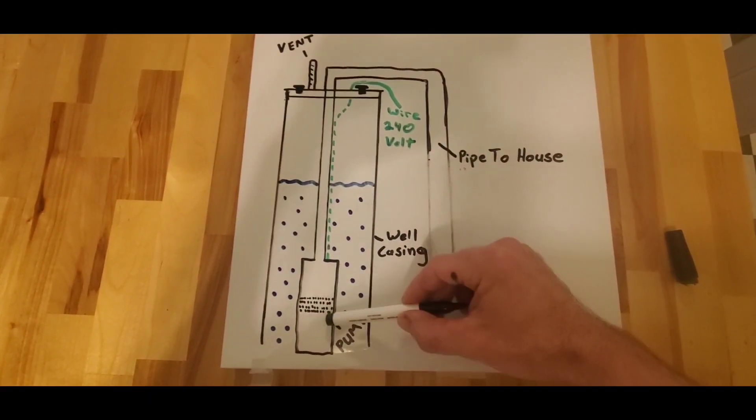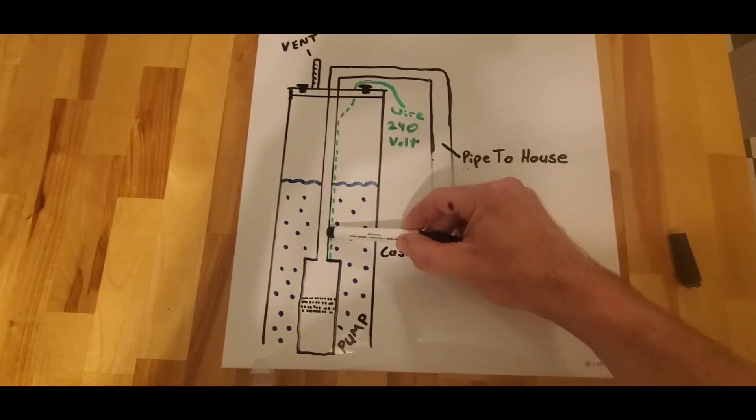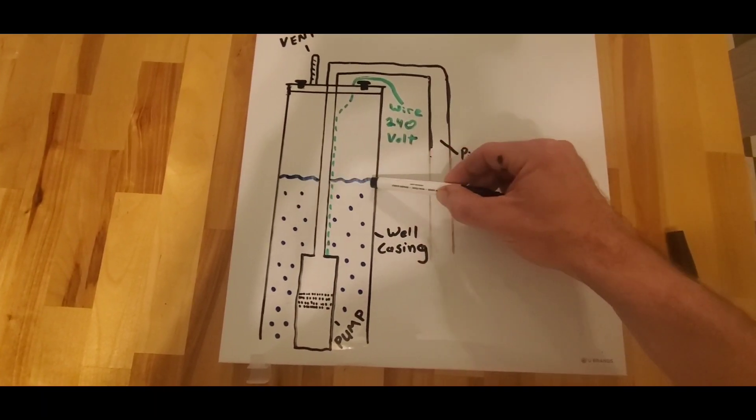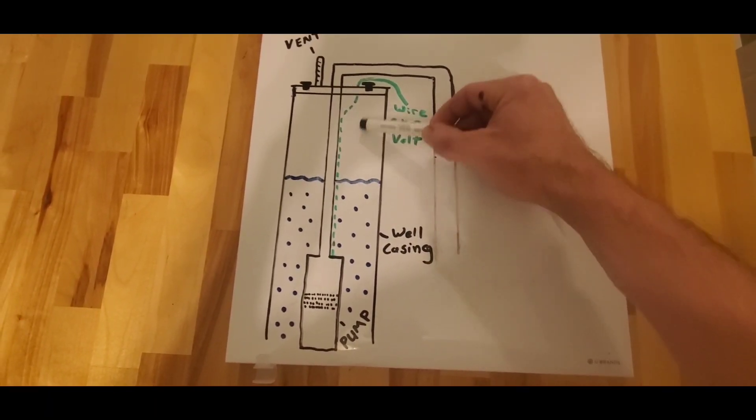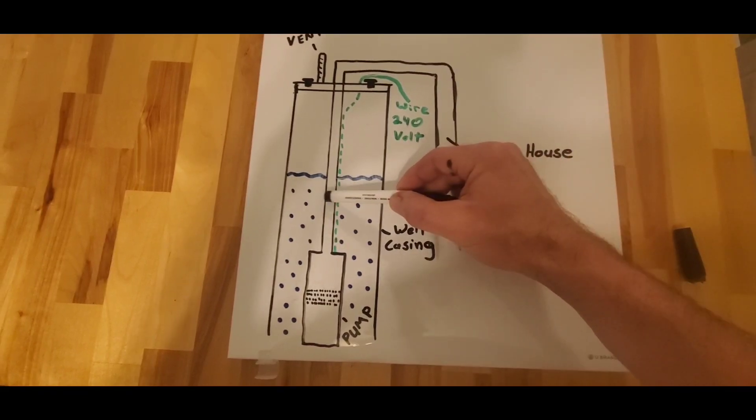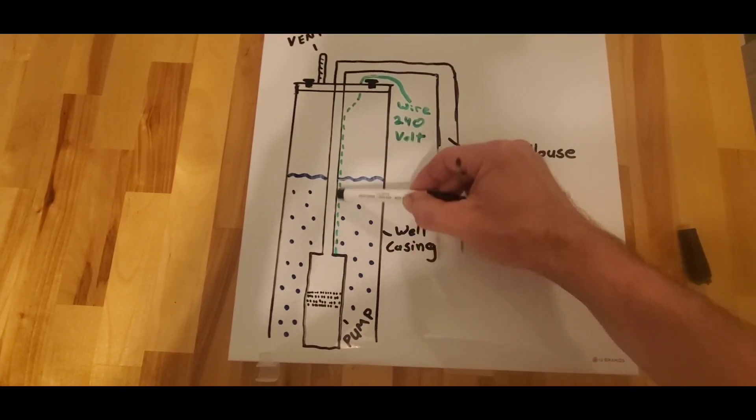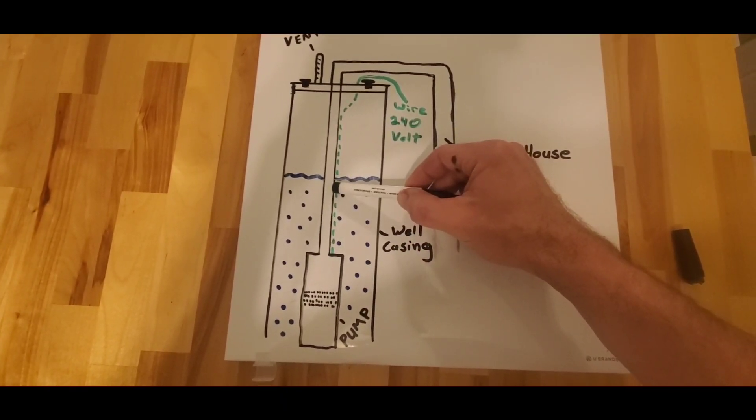So when it has an ice obstruction up here, the pump is down here running. And this drop pipe, being that it is submerged in water 20 or 30 feet below the surface of the ground, this water pipe here is not rated for 215 PSI.